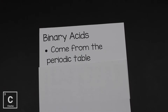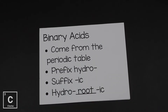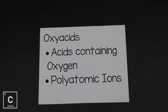Binary acids contain the non-metal that comes from the periodic table. A binary acid also just has two elements: a hydrogen (H) and something else. When we have a binary acid, we know it's binary because it has the prefix hydro and the suffix -ic. So we get hydro, root word, -ic.